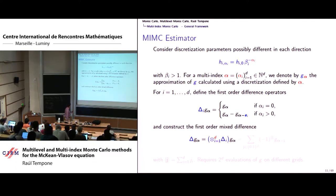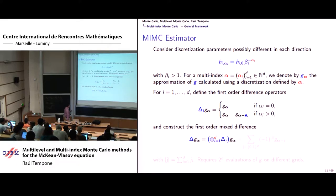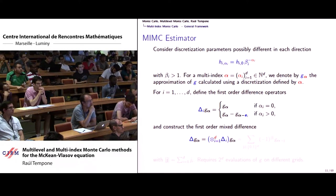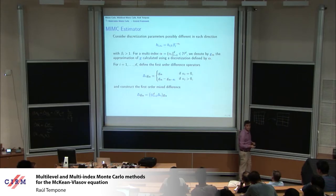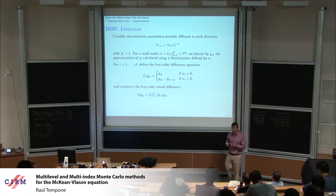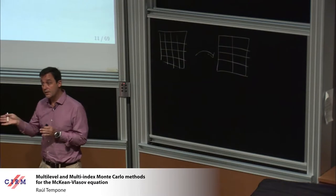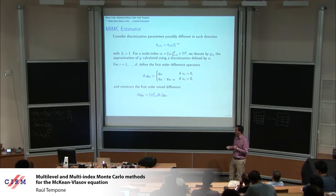We need to introduce the unidirectional differences, denoted delta_i. If you cannot refine further along direction i (i.e., alpha_i is 0), you just take g_alpha. But if you can refine along that direction, this is g_alpha minus g_alpha de-refined only along direction i. So you're taking differences between two approximate solutions, one slightly more refined than the other along direction i.